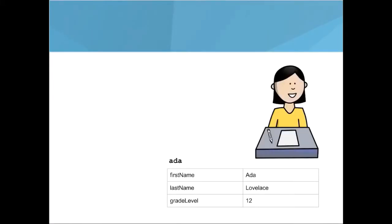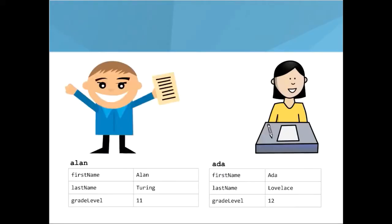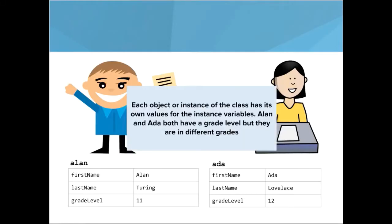Here is Ada, the student object, and Alan, the student object. You can see they both have their own copies of these instance variables. That's why each instance has a version — Ada is an instance, Alan is an instance. They both have a first name, but the actual values of their first name are different. That's the key point about an instance variable: each object of the class, each instance has its own version. Each object or instance of the class has its own values for the instance variables. Alan and Ada both have a grade level, but they are in different grades.